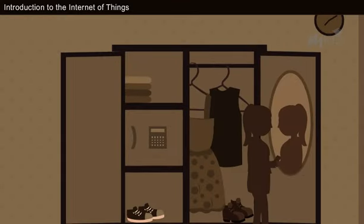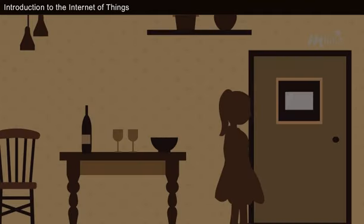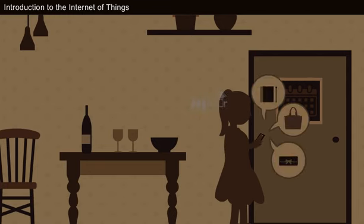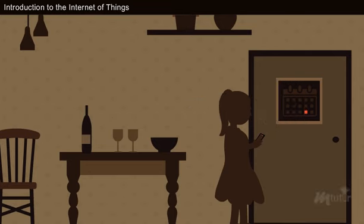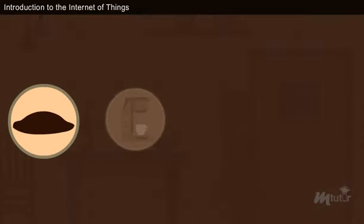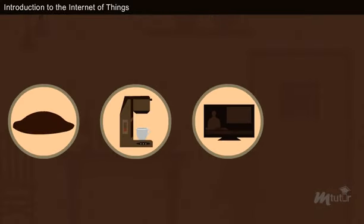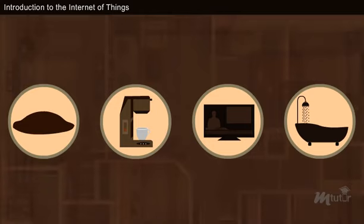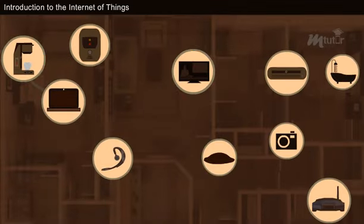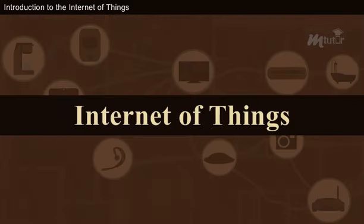Also, when you get to your closet, the mirror helps you pick out the outfit and the window on your door reminds you of the schedule for the day and to take the things you need based on the data in your smartphone or tablet. In this example, the pillow, coffee maker, television, shower, etc. are things, and this network where everything is connected is called the Internet of Things.